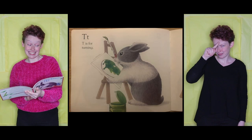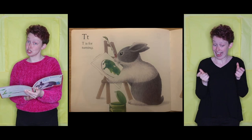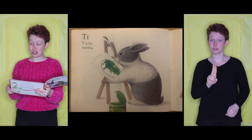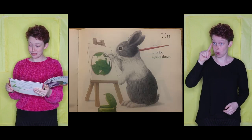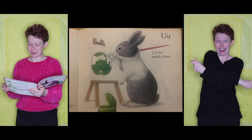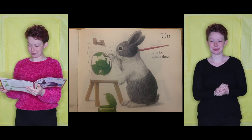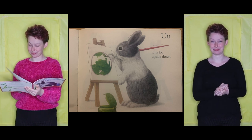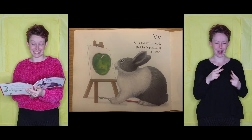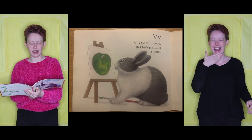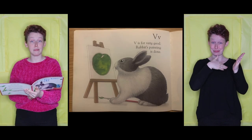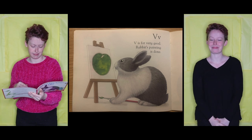T is for Turning. U is for Upside Down. V is for Very Good, Rabbit's Painting is Done.